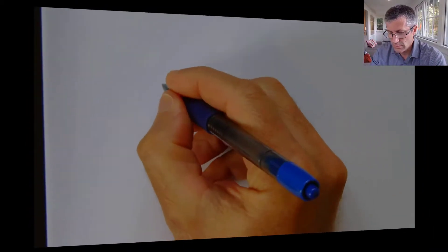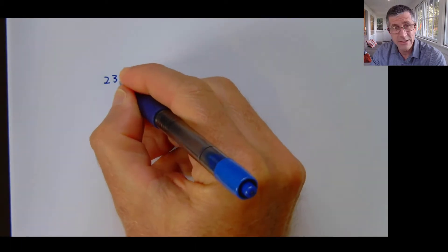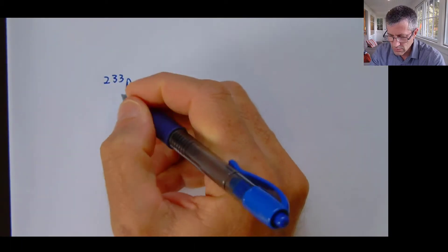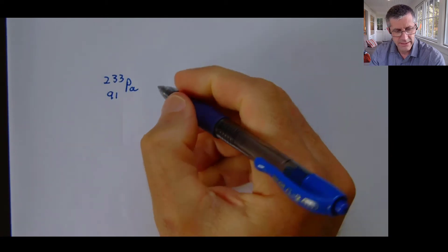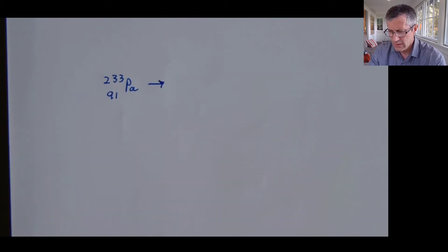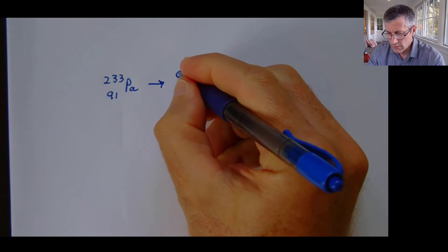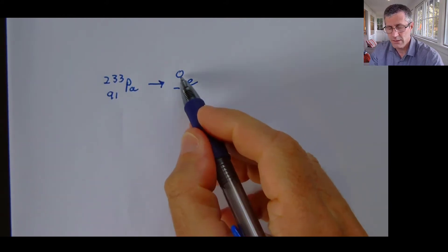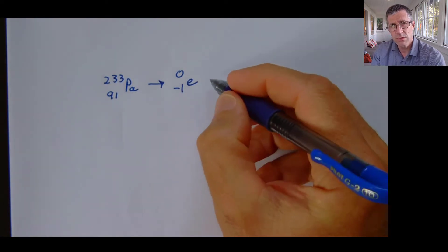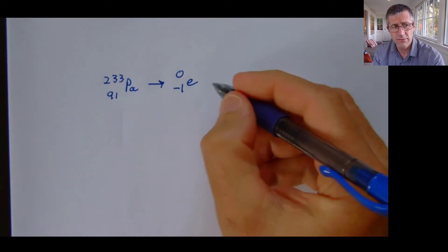So again, protactinium-233. This is 233 mass. It's protactinium, so Pa. I'm going to look up on the periodic table and find that the number of protons protactinium has is 91. This is going to go through beta decay. So you remember what beta decay is. Beta is an electron that comes shooting out of the nucleus. So I'm taking a neutron and shooting an electron out of it. So this has really negligible mass and a charge of minus 1.